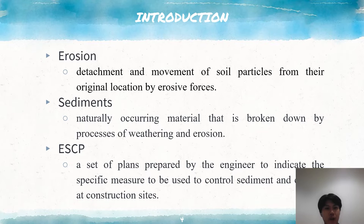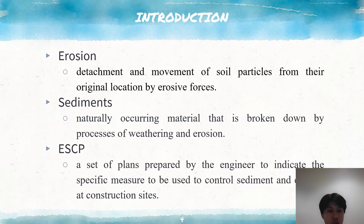I will explain what is erosion and sediment. Erosion is a natural geological process that must be controlled since they have negative impacts on water quality. Soil erosion is the detachment and movement of soil particles from their original location by erosive forces such as water, wind and gravity. Sediment is a naturally occurring material that is broken down by processes of weathering and erosion. Sediment deposited can have an influence on aquatic habitat and water quality. ESCP is a set of plans prepared by the engineer to indicate the specific measures to be used to control the sediment and erosion at the construction site.